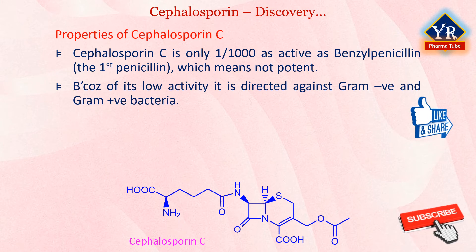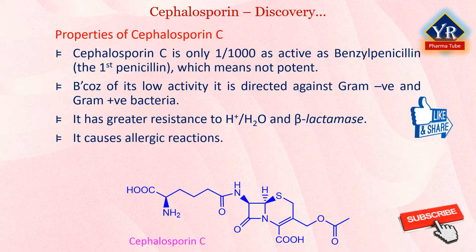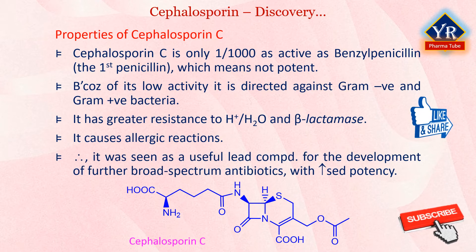Because of its low antibacterial activity, it is more evenly directed against gram-negative and gram-positive bacteria. However, it has greater resistance to acid hydrolysis and enzymatic hydrolysis by beta-lactamase enzyme, and becomes highly concentrated in the urine, which makes it useful in urinary tract infections caused by gram-negative organisms. It is also less likely to cause allergic reactions. Therefore, Cephalosporin C was seen as a useful lead compound for the development of further broad-spectrum antibiotics, hopefully with increased potency.